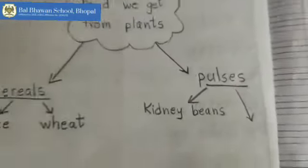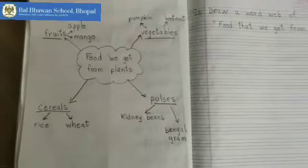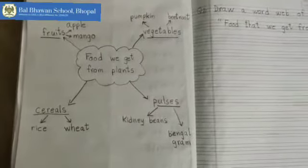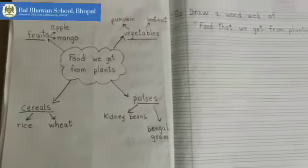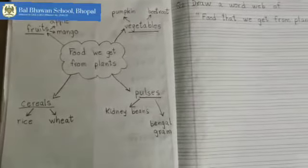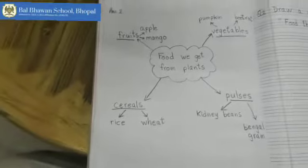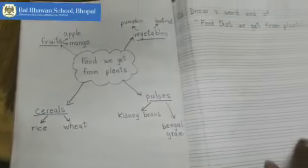We also get grams from plants — Bengal grams, green grams. So like this you are going to make the word web in your notebook. After doing this, turn your page and write question number three.